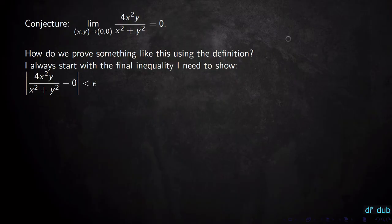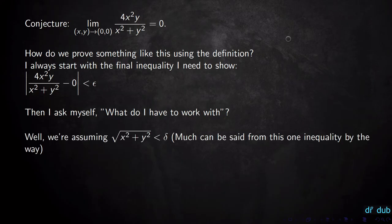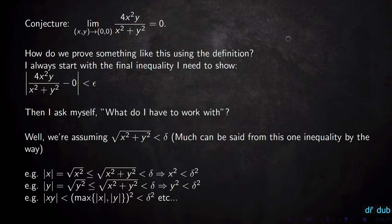What do we have to work with? We know the distance from (x,y) to the origin is less than delta, which means the square root of x² + y² is less than delta. A lot can be said from this one inequality: the absolute value of x is less than delta, the absolute value of y is less than delta, and the absolute value of xy is less than delta squared.